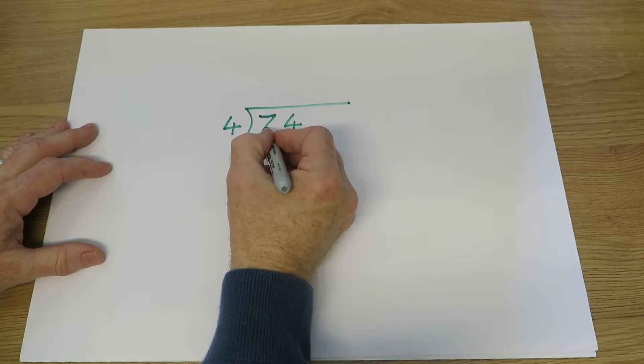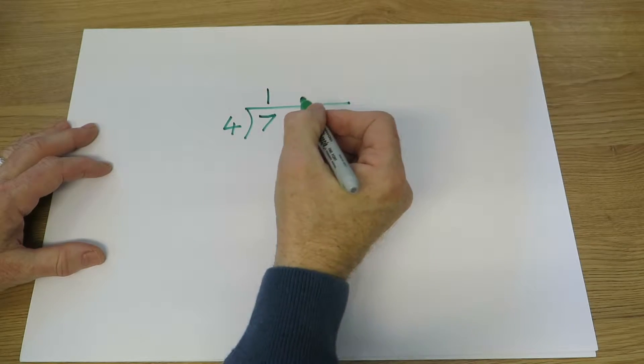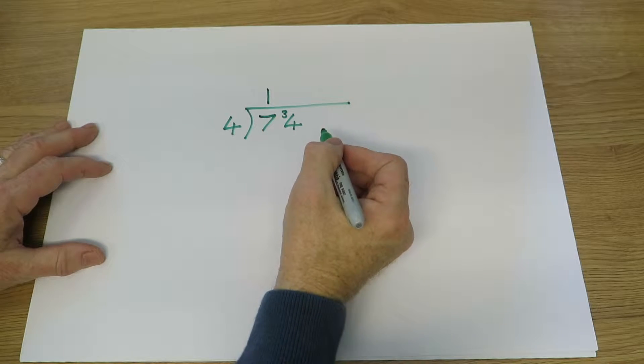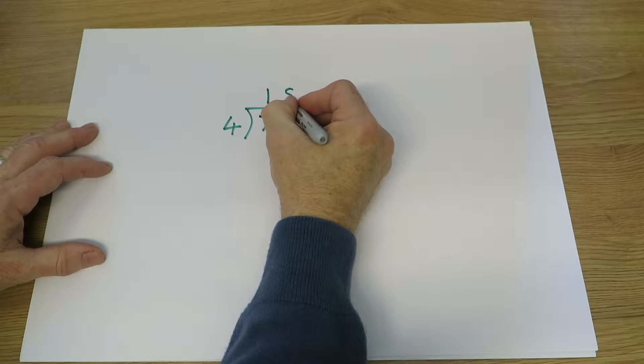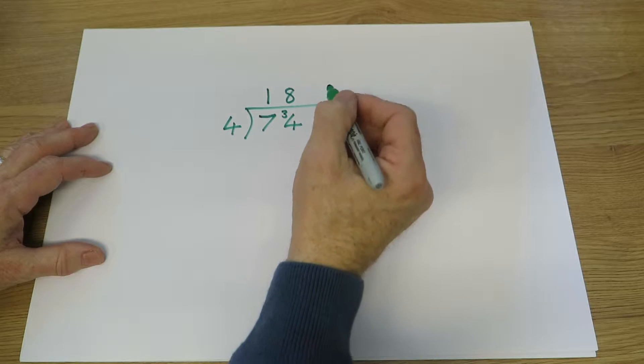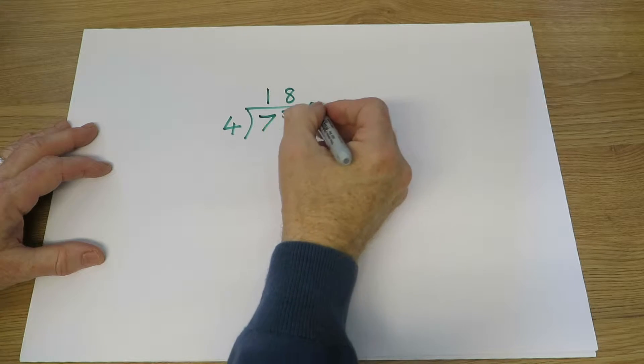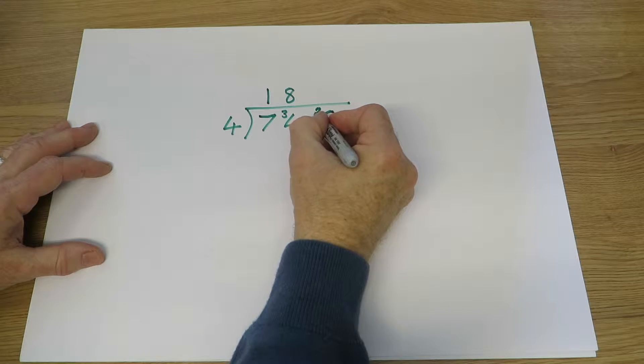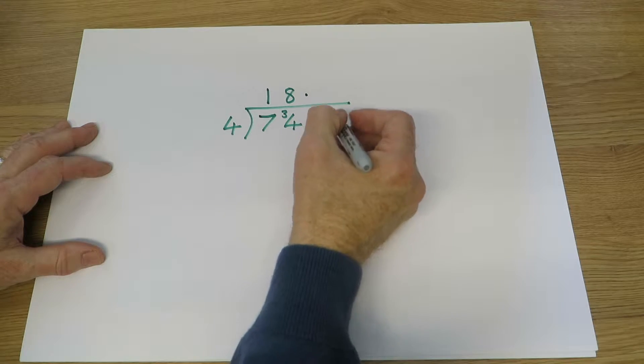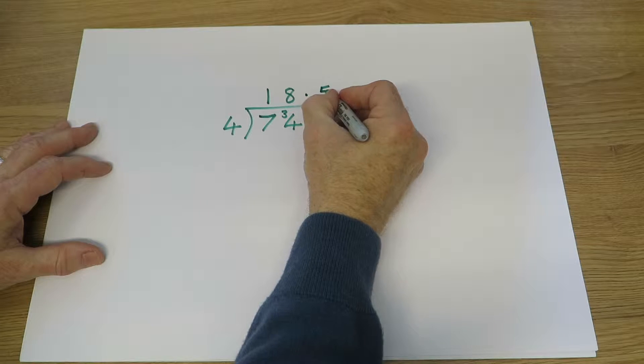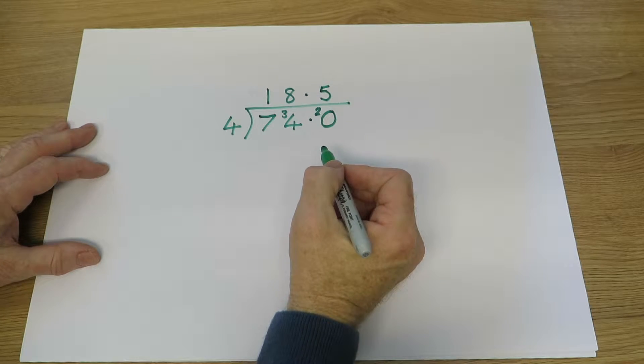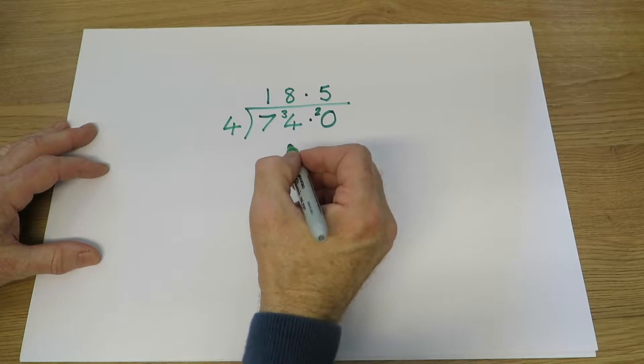Or how many fours in 7? 1 with 3 left over. How many fours in 34? 8 with 2 left over. But actually we can put 74 point as 0 and take the two with us into the tenths column. So now how many fours in 20? There are 5. So the answer comes out as 18.5. So we've seen three answers to the question.